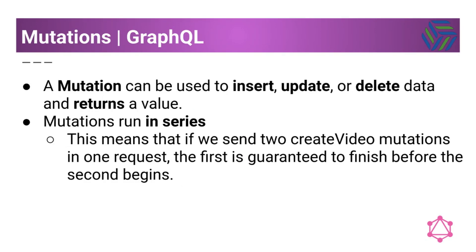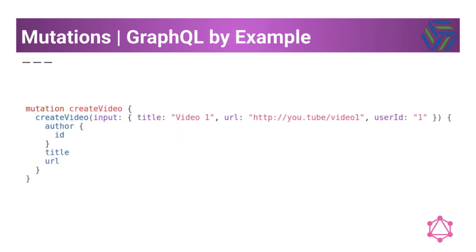A mutation can be used to insert, update, or delete data and returns a value. Mutations run in series — this means that if we send two create video mutations in one request, the first is guaranteed to finish before the second begins. Here is an example: a mutation named create video where we pass the title, URL, and identifier of the author for that video. As a result, we expect the identifier of the author, the title, and the URL of the video.